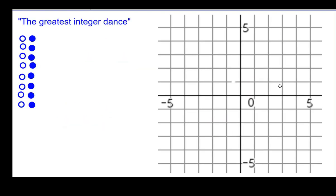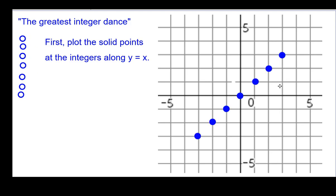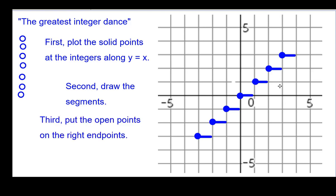So to do this as the greatest integer dance, this is what we'd suggest to graph the greatest integer function. First plot the solid points at the integers along the line of y equals x, but just points, not the line. So that would be those. Second, we would say draw in the segments or the steps. And third, put the open points on the right end points. Not the correct end points, but the right end points.